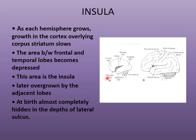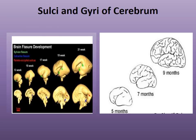Another depression appears in the area between the frontal and temporal lobes. This area deepens and widens along with the lateral sulcus and is called the insula, which at birth is almost completely hidden in the depths of the lateral sulcus. Comparing the brain of a five-month-old embryo, at seven months, and at birth, one can see it becoming full of sulci and gyri, slowly and steadily increasing the surface area.